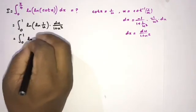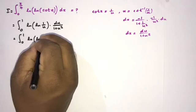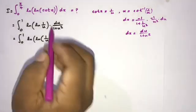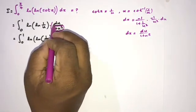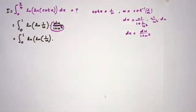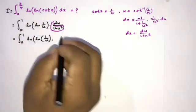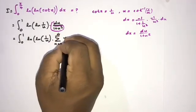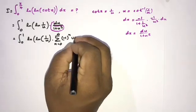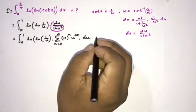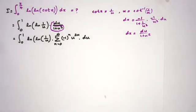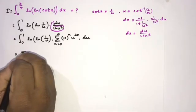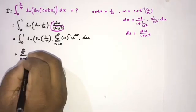The integrand becomes ln(ln(1/u)), and instead of 1/(1+u²) we use the infinite series expansion: this equals the sum from 0 to infinity of (−1)^n times u^(2n). We can then switch the sigma notation and integral sign.